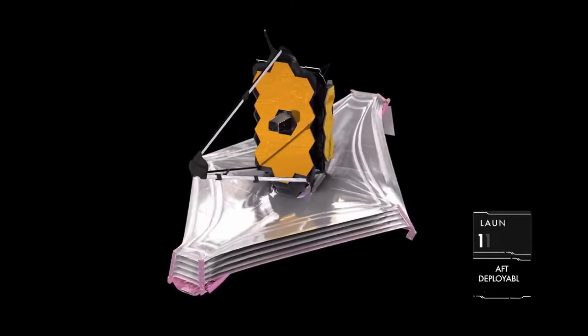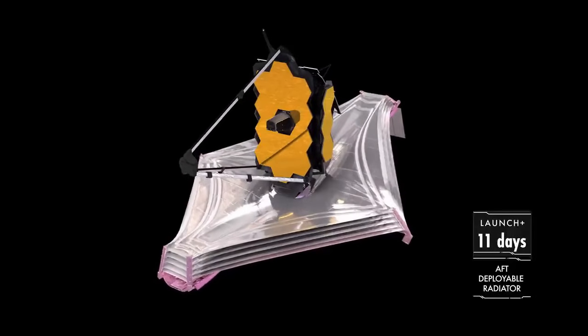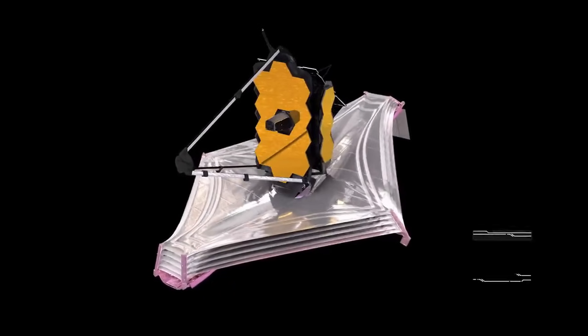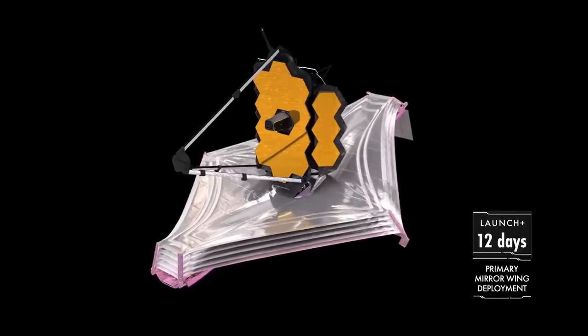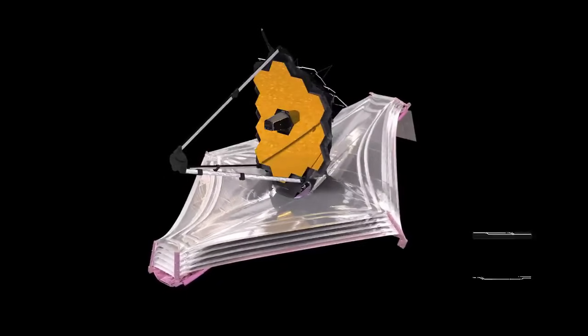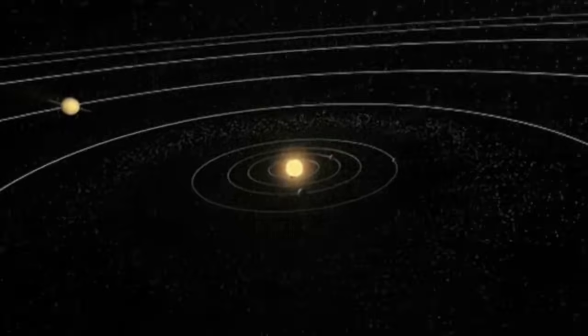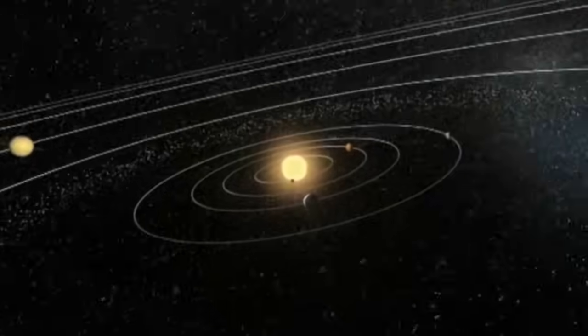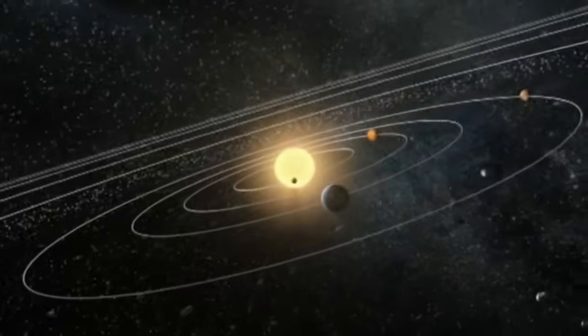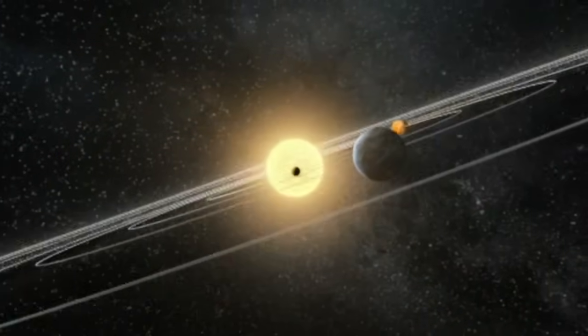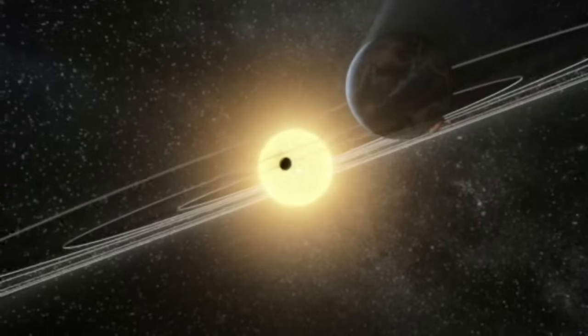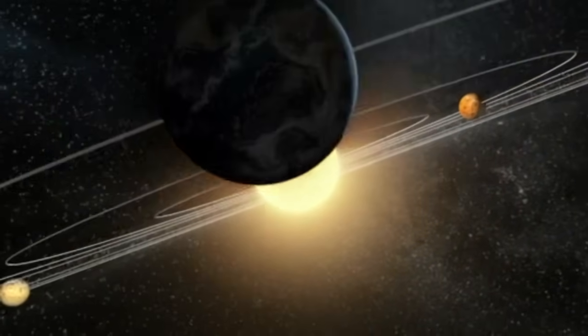The James Webb Space Telescope has an uncertain future. It is literally a million miles from Earth. When it fails, there will be no saving it. It will become another dead spacecraft, drifting into orbit around the Sun. I hope, during this brief spark of life, it will solve the mysteries it reveals.